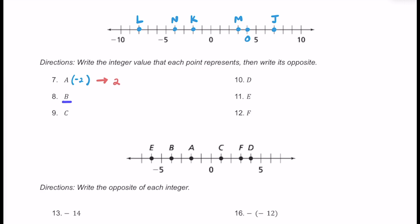For number 8, we have b. b is located over here at negative 4. Let's go ahead and write that the point is negative 4. But then what's the opposite of negative 4? The other number that is 4 away from 0 is going to be positive 4. For number 9, we have c, right over here at positive 1. So the point is 1, and the opposite of 1 would just be negative 1. For number 10, we have d. d is located at positive 4, so the opposite of 4 should be negative 4.